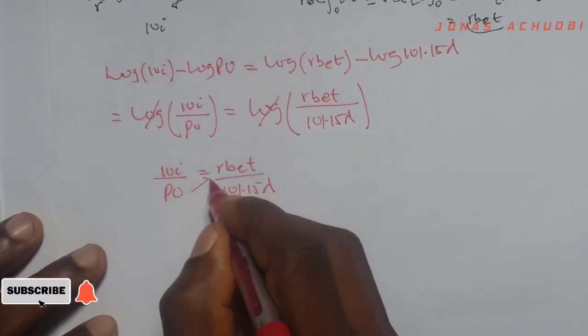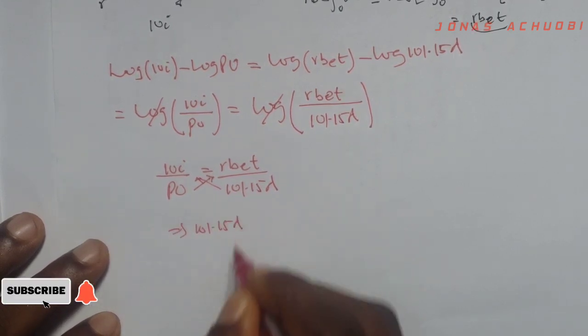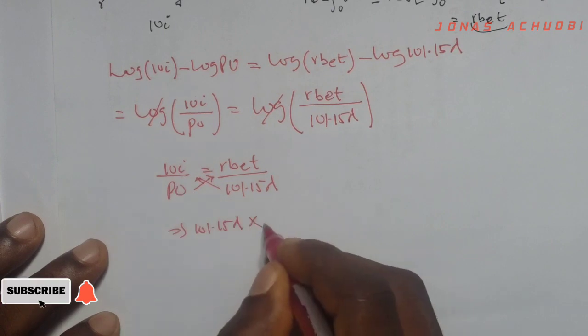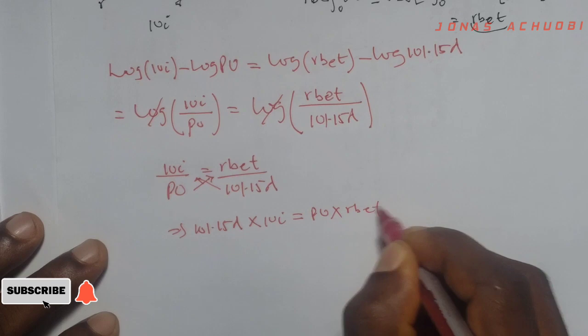So we can now cross multiply, and we have, this becomes 101.15 times lambda times 10i equal to po times rbet.